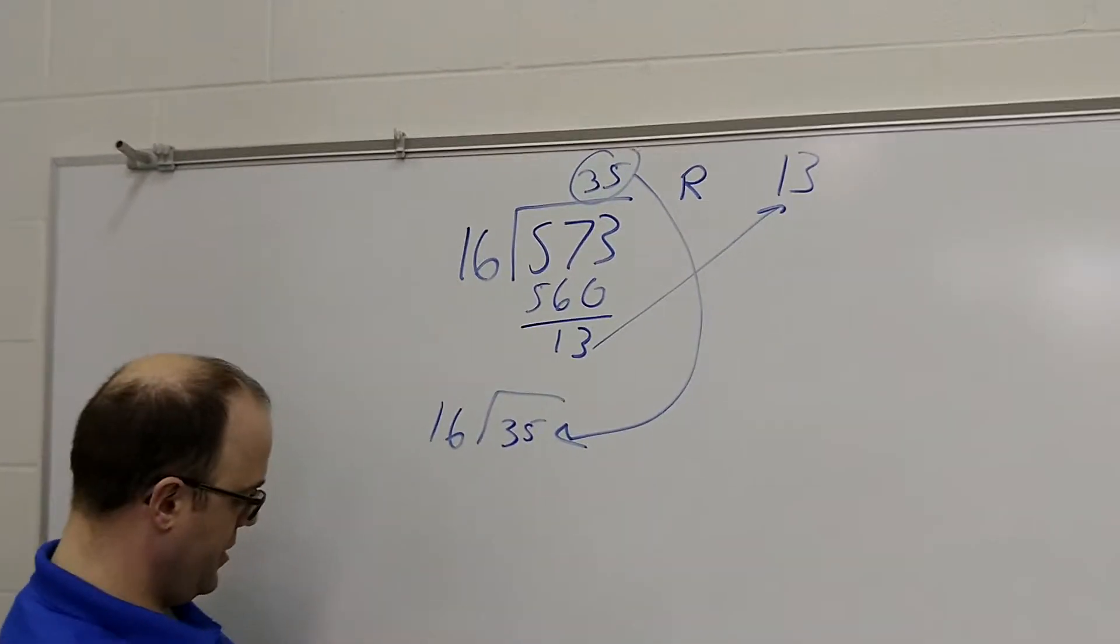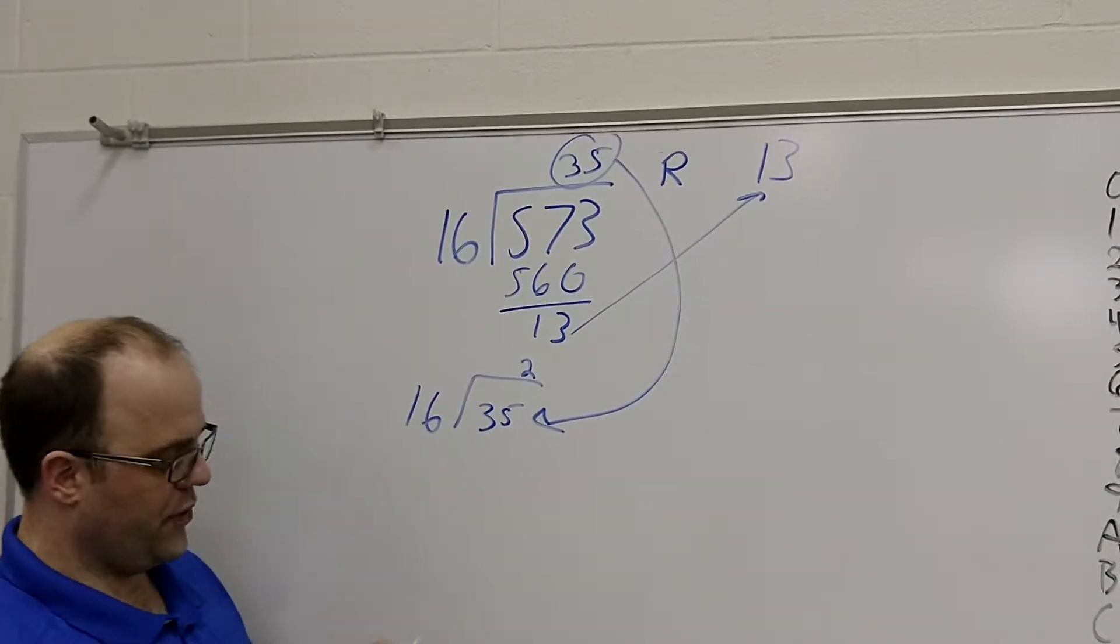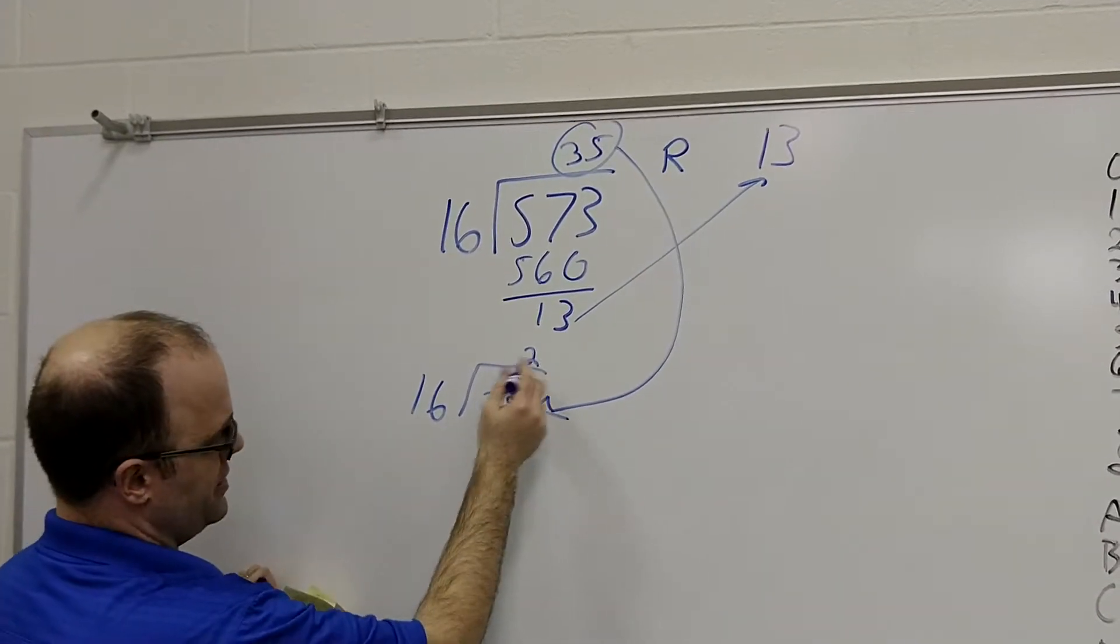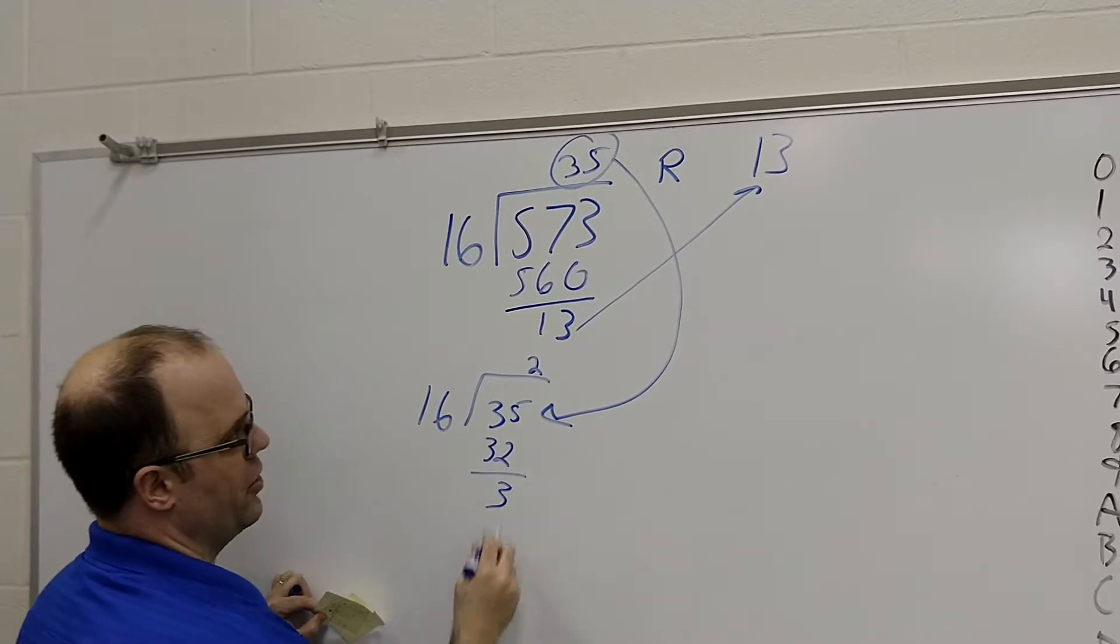This goes into 35 twice. So if you put that in, you'll get 2 point something something something something something. So I take this times this, and this will give me 32. Subtract, that will give me a remainder of 3.